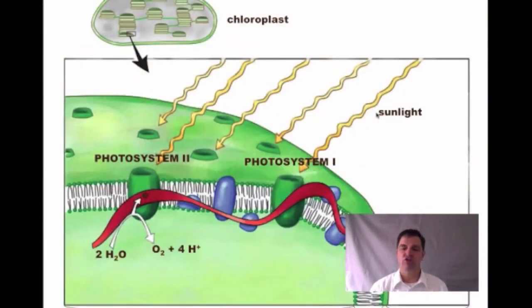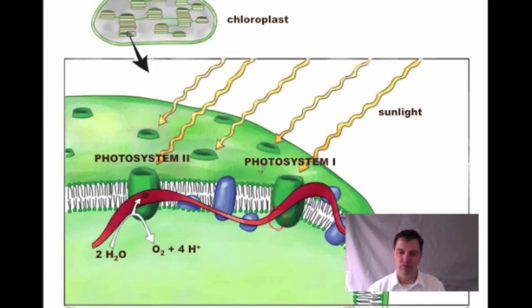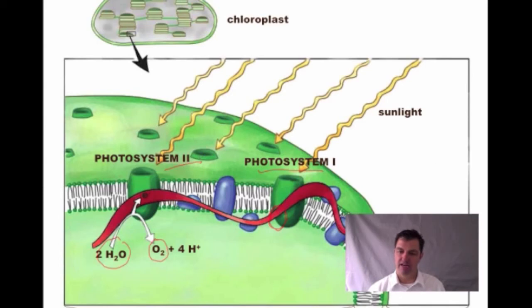Here's just another view showing the same thing: photosystem II, photosystem I, the electron transport chain — that's where the final electron acceptor, photosystem I, is. There's the water-splitting reaction where I get O2 out of photosystem II, and there's my NADPH.